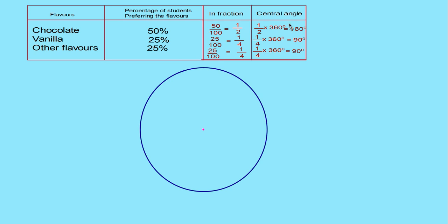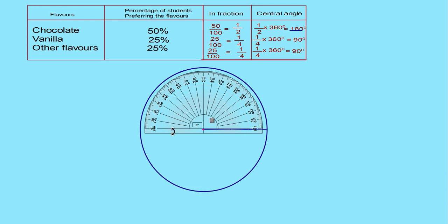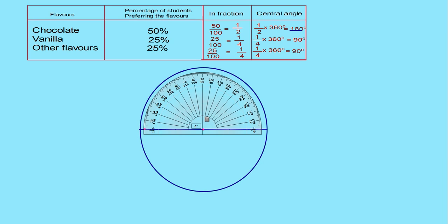First, draw a radius. The first angle is 180 degrees — draw that now. Keep the protractor at this radius, mark 180 degrees, then join. This sector represents chocolate, and the half portion of the circle represents chocolates.